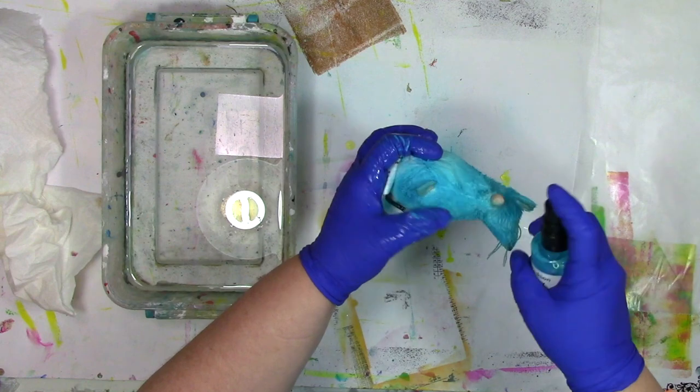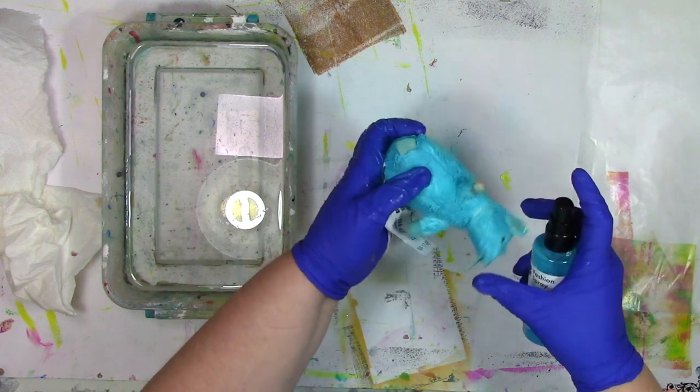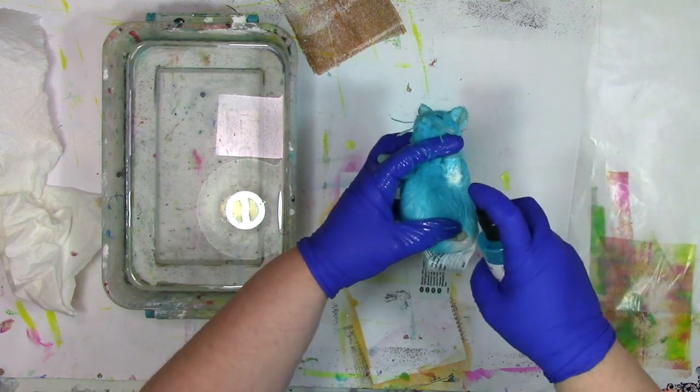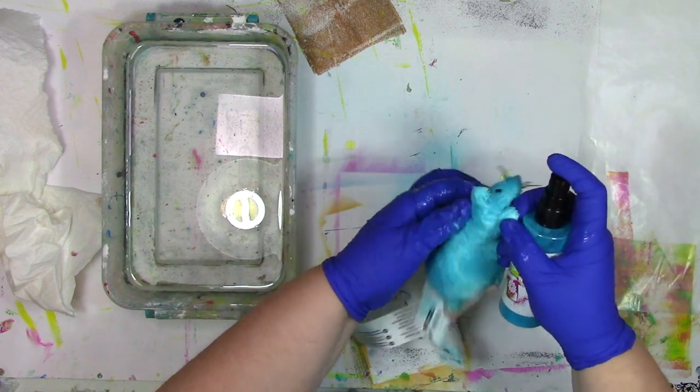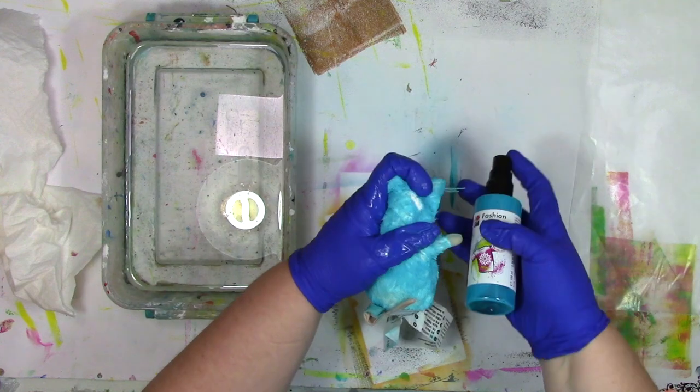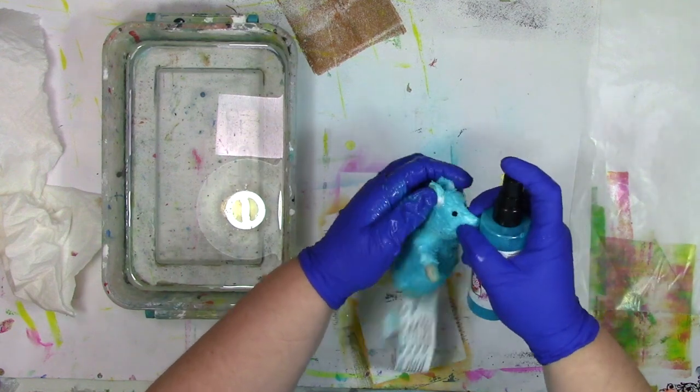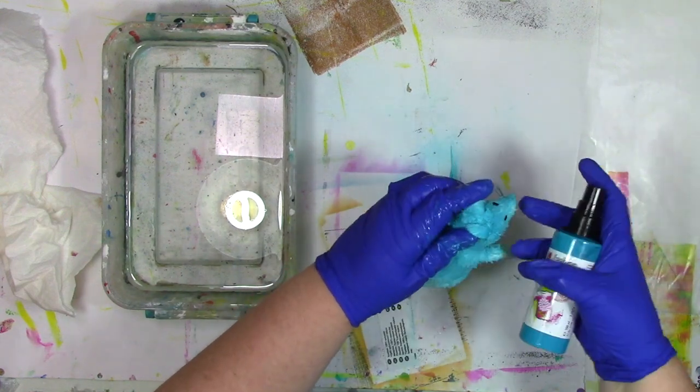But you do want to make sure that you get all those little nooks and crannies. Things like moving the feet, making sure you've got under armpits, behind ears. It's kind of like when you have little kids in the bathtub. You need to check those on the mice too, especially around the ears. There is something about the ears that really lends itself to those white spaces.